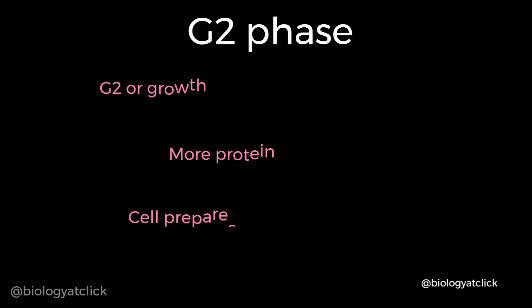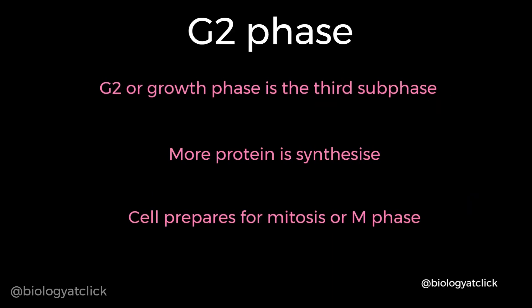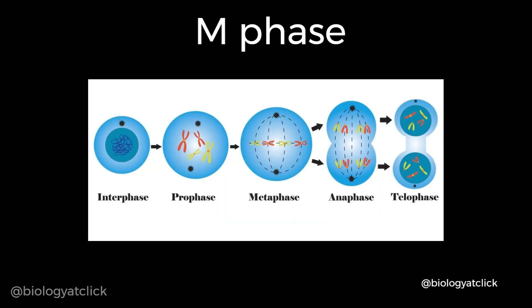G2 phase is the third subphase of interphase in the cell cycle, directly preceding mitosis. It is a period of protein synthesis and rapid cell growth to prepare the cell for mitosis. The M or mitosis phase is divided into prophase, metaphase, anaphase and telophase, where the actual cell division occurs. We will learn about mitosis in the next video.